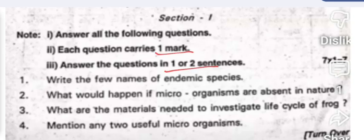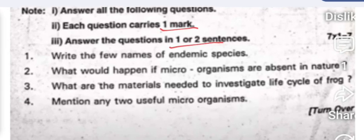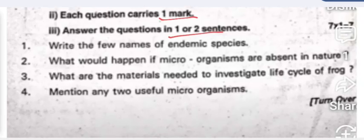The Section A questions are: write a few names of endemic species; what would happen if microorganisms are absent in nature; what are the materials needed to investigate the life cycle of a frog; mention any two useful microorganisms; and identify the indicated part in the given picture and which microorganism resides in it.